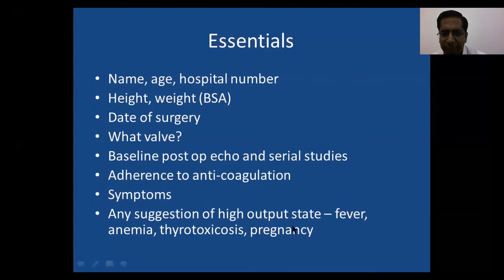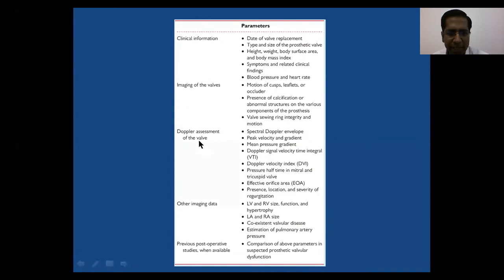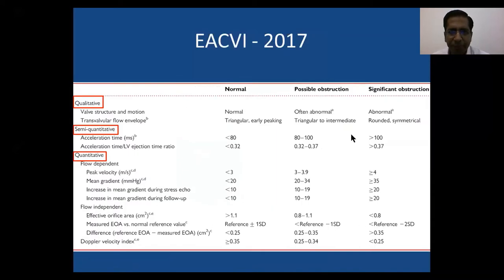High output states like pregnancy or anemia need to be considered, and will be illustrated through cases. From the EACVi guidelines, assessment involves clinical information (height, weight, BSA, blood pressure, heart rate), examination of the valve itself, Doppler data, and LV/RV size and PA pressures — much like assessing any native valve.